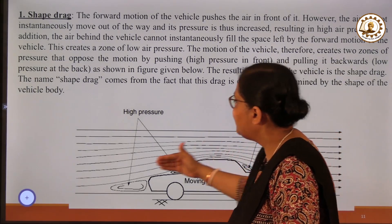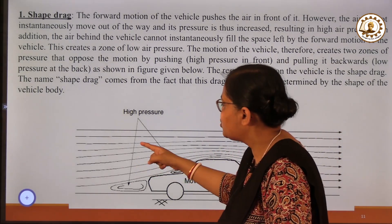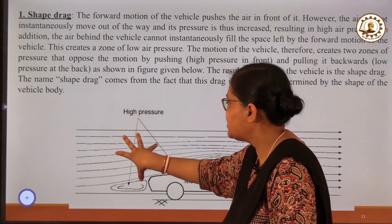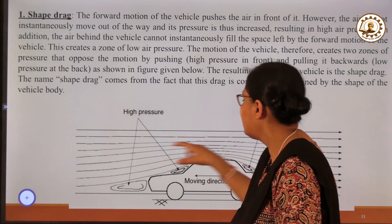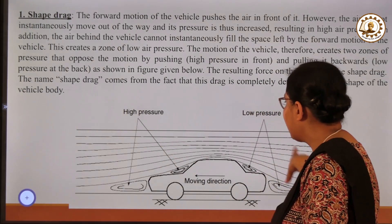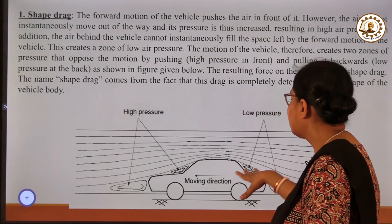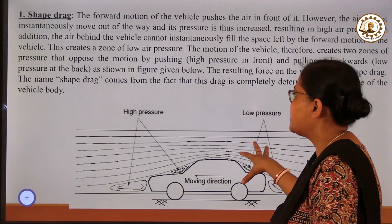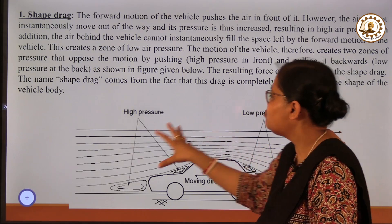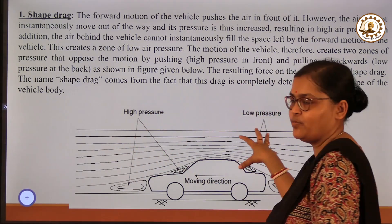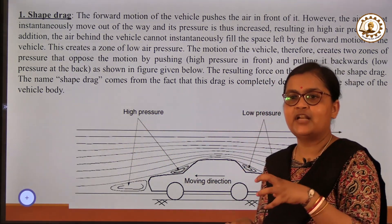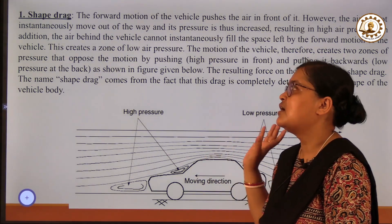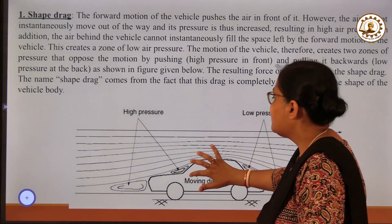As the car moves in the forward direction, the wind at the front of the vehicle creates high pressure, and at the rear part of the vehicle there is a low pressure zone. Due to this high pressure and low pressure zones — a push-pull motion — shape drag exists.